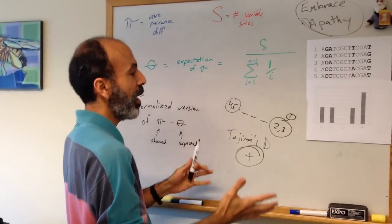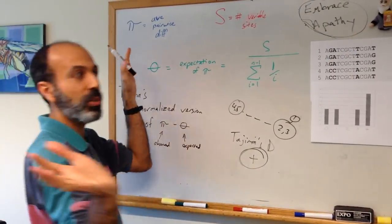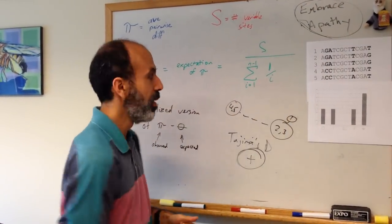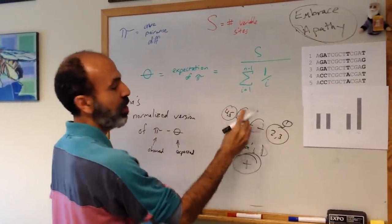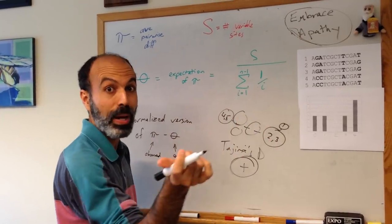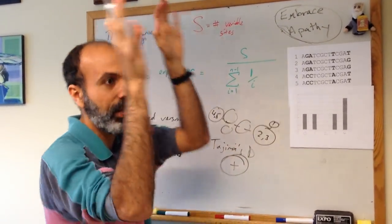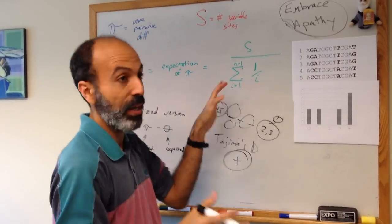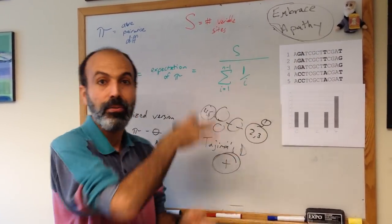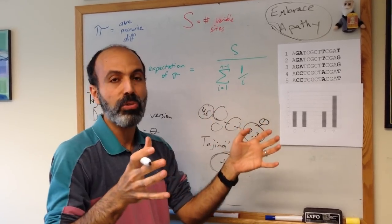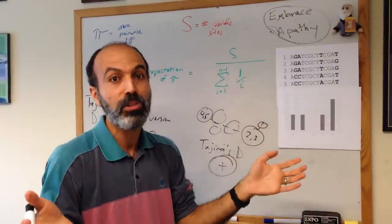The alternative is that you actually started with a big population that suddenly contracted. Historically, rather than looking like this, there were a lot of other individuals here in the middle to make it more like that original population I showed you, but they were lost in the process of this population shrinking. If it's the latter case, if the population stays small, you will go back fairly quickly to having the standard neutral expectation but with less variation overall.